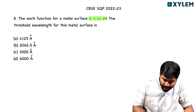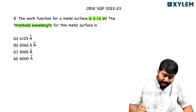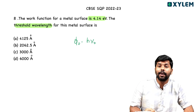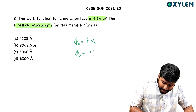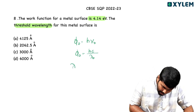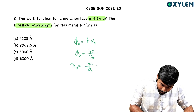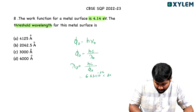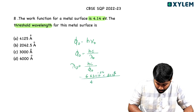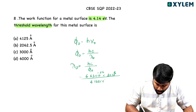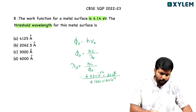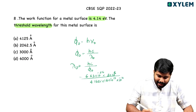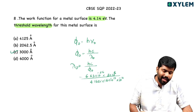The work function for a metal surface is 4.14 electron volt. Find the threshold wavelength for this metal. Using phi-zero equals h-nu₀ equals hc by lambda₀, so lambda₀ equals hc divided by phi-zero. Substituting: 6.63×10⁻³⁴ × 3×10⁸ divided by 4.14 × 1.6×10⁻¹⁹ joules. The answer is 3000 angstrom.